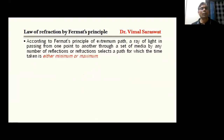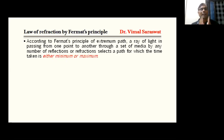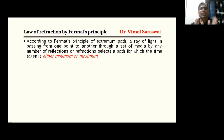Before moving on to Law of Reflection, what is Fermat's Principle? According to Fermat's Principle of Extremum Path, a ray of light in passing from one point to another through a set of media by any number of reflections selects a path for which the time taken is either minimum or a maximum. In between these two, there will be no path chosen by the light.